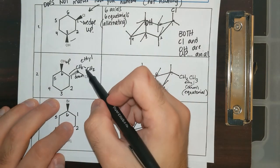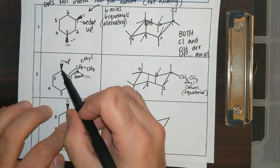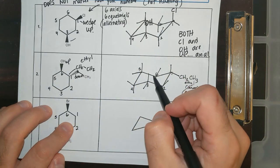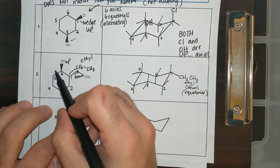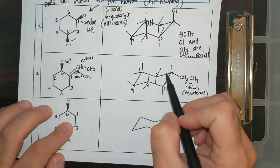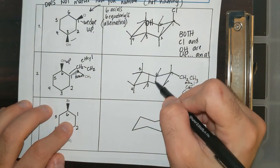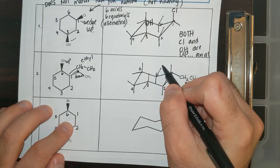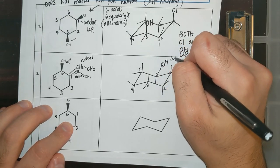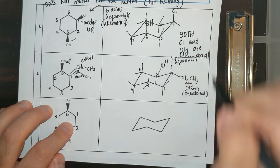Then going to what I numbered as my sixth carbon — technically this would be carbon two if named the right way, but it doesn't matter; it's still next to it. The OH group is up, so I have to find which one is up. It looks like up is equatorial and down is axial, so I put my OH up and it ends up being equatorial.